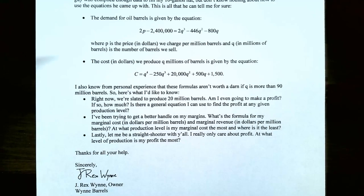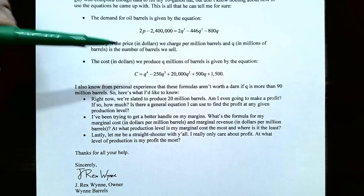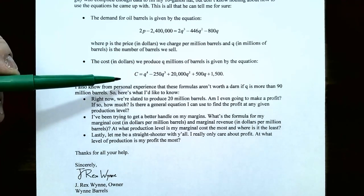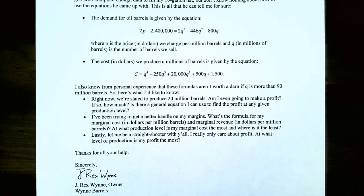The cost in dollars to produce Q millions of barrels of oil is given by the equation: C equals Q to the fourth, subtract 250Q cubed, plus 20,000Q squared, plus 500Q, plus 1,500.